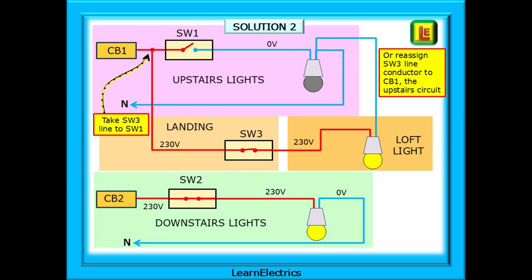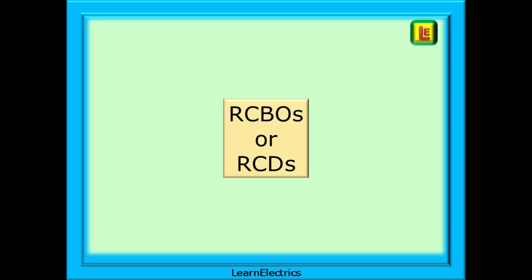Alternatively, reassign the 230 volt line conductor that goes to SW3 back to the circuit breaker number 1, the upstairs circuit, so that the line and neutral are both controlled by the same breaker. Now, isolating CB1 will isolate the upstairs lights and the loft light.